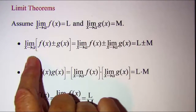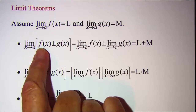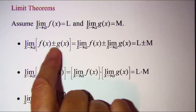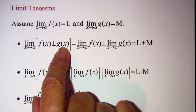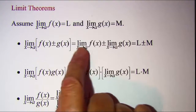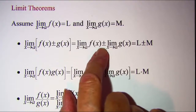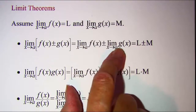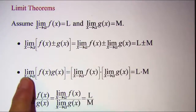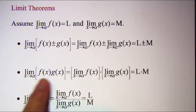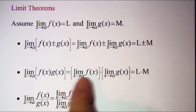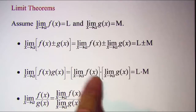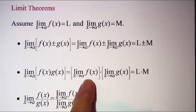The first limit theorem says that the limit of the sum or difference of two functions is equal to the sum or difference of the limits. The second theorem states that the limit of a product is equal to the product of the individual limits.